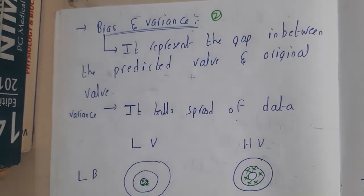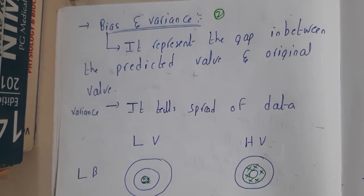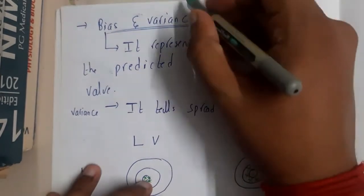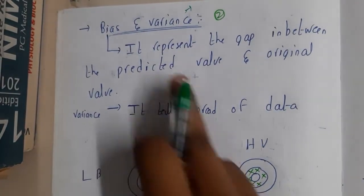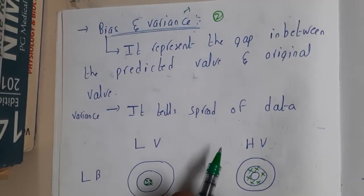Hello, we are back with our next lecture. In this lecture, let's go through the concept of bias and variance. If you recall, we've already discussed variance, which explains the spread of data. Bias represents the gap between the predicted values and original values.